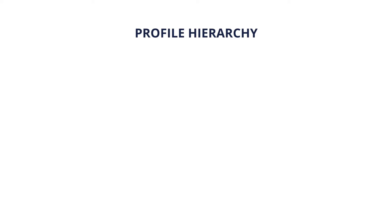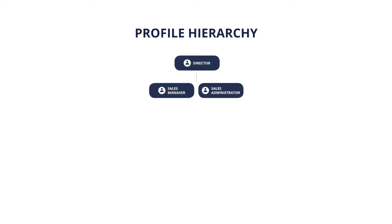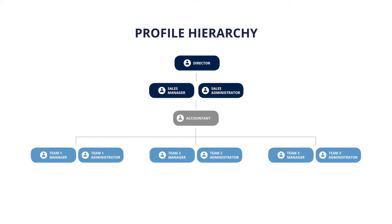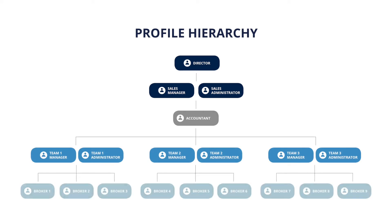The profiles are set out in a hierarchy, with the top level being the Director, Sales Manager, and Sales Administrator. There is a separate profile for accountants that has different access rights than other profile types. The next level is that of Team Manager and Administrator, followed by the broker. It is very important to get this hierarchy set up correctly in your company, and we will help you make sure that it is correct.